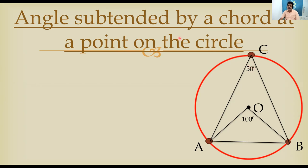Since C is on the major arc, the angle at the point is half the angle at the center. We can state: angle subtended by a chord at a point on the circle is half of the angle subtended by the chord at the center. Or conversely, the angle at the center is two times the angle at a point on the circle — double or twice. This is the relation between the two angles.